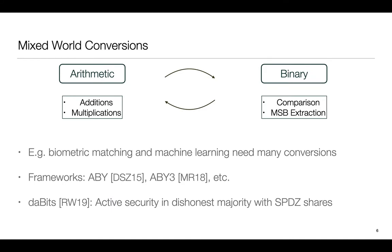Due to this there is motivation for efficient ways to switch from one domain to the other and back. For instance when we consider applications such as machine learning and biometric matching we need a lot of conversions. Works such as ABY and ABY3 have made a lot of progress in this direction by proposing fast ways to switch back and forth but most of these works operate in the weaker honest majority setting. Only recently works such as the DABITS paper have proposed a framework for the dishonest majority setting with active security using SPDZ shares. We further this domain by proposing a fast framework for switching between arithmetic and binary worlds for all the settings.